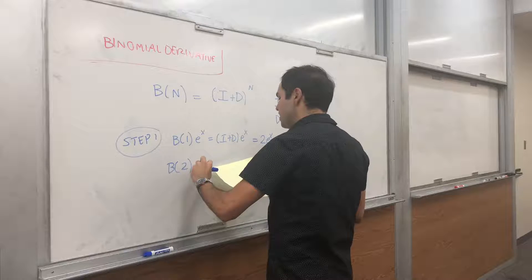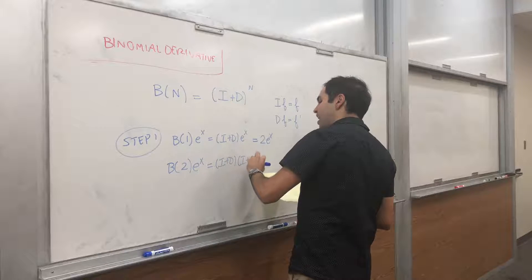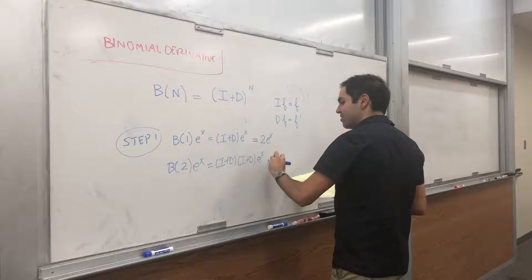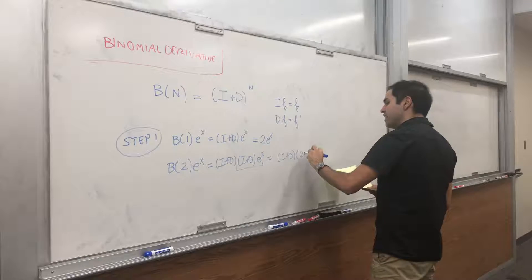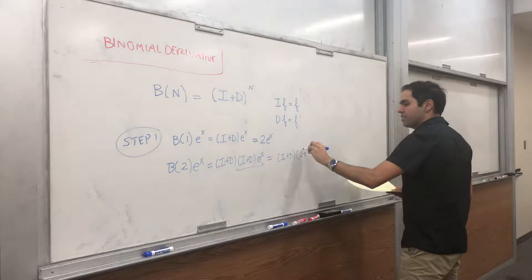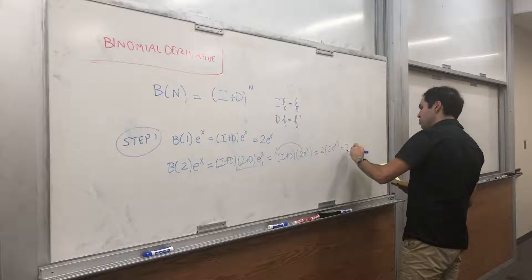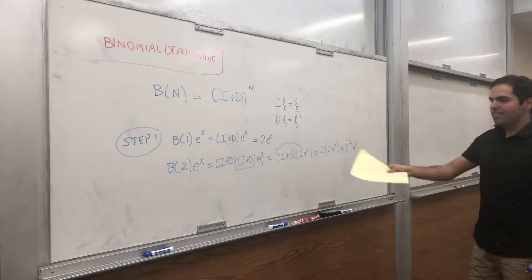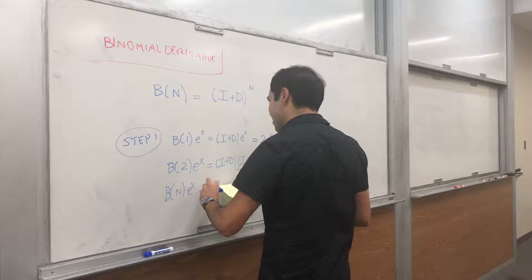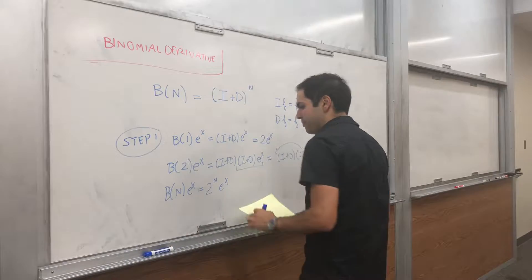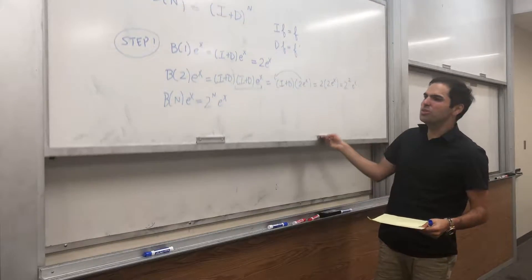Let's continue. B_2(e^x) = (I + D)^2(e^x) = (I + D)(I + D)(e^x). We just calculated (I + D)(e^x) = 2e^x, so now (I + D)(2e^x) = 2 * 2e^x = 2^2 * e^x. You can already see the pattern: B_n(e^x) = 2^n * e^x. It's a nice way of transforming e^x into 2^n * e^x.